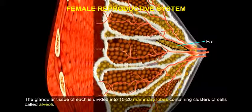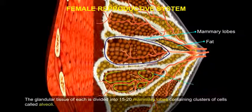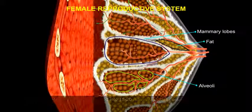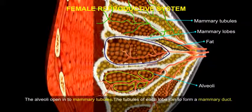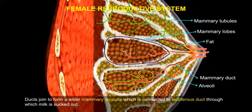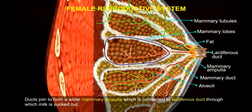The glandular tissue of each breast is divided into 15 to 20 mammary lobes containing clusters of cells called alveoli. The alveoli open into mammary tubules, and the tubules of each lobe join to form a mammary duct. These ducts join to form a wider mammary ampulla, which is connected to a lactiferous duct through which milk is sucked out.